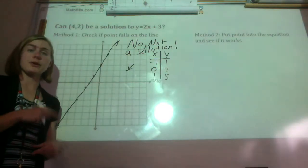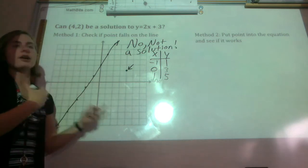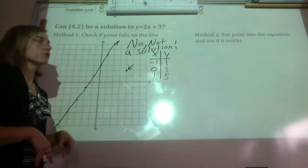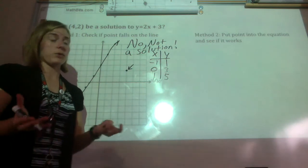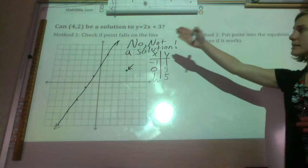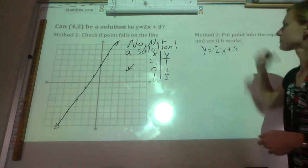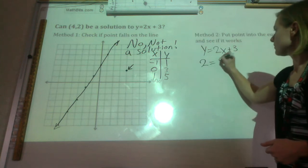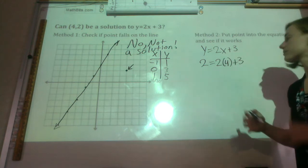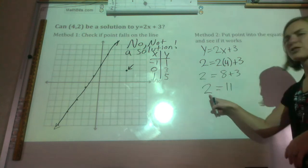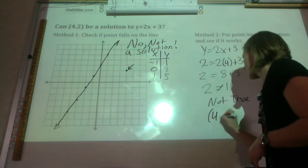So that's the first way that you can solve to see if point (4,2) is a solution to that. But maybe you don't have graph paper with you or the book didn't provide you with a graph, which happens. Or you don't have room to draw one. The second method is just plugging the point in and see if it works. So our equation is y equals 2x plus 3. So 2 is y and 4 is x. So now we just need to work it out and see if we come up with something true. Does 2 equal 11? No, this is not true. So that means that (4,2) is not a solution.